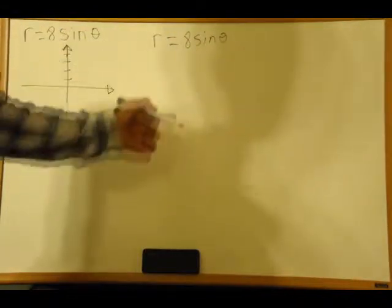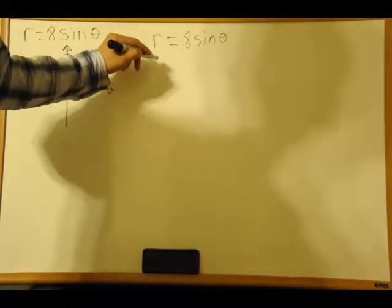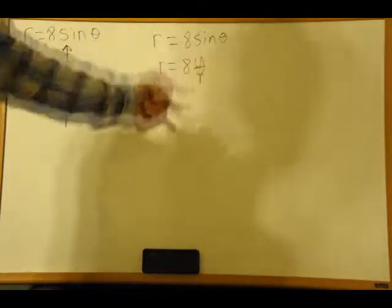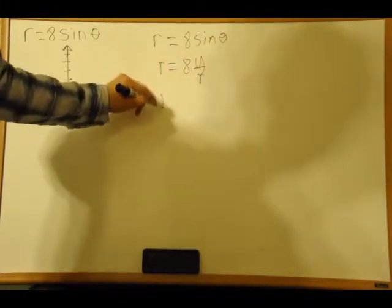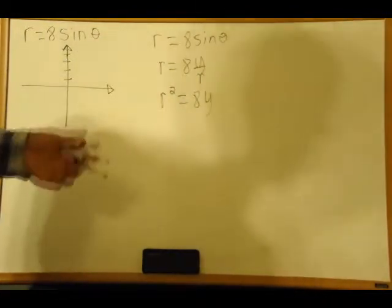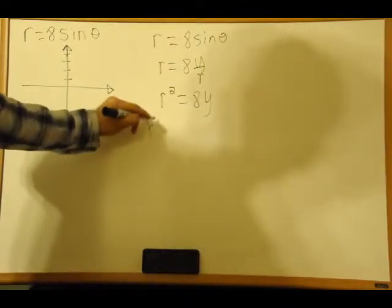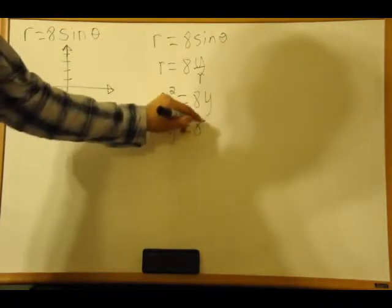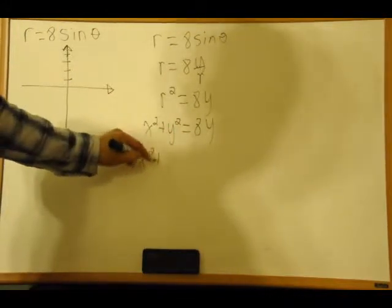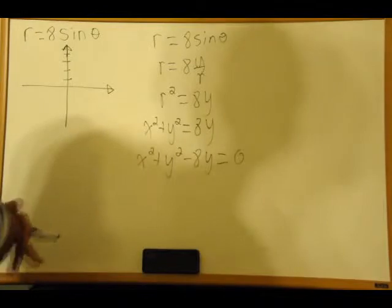Now you can recognize that y is equal to r sin θ, so divide both sides by r in that equation, and you get r squared is equal to 8y, because sin θ is y divided by r. Now multiply both sides by r squared, which is equal to 8y. Since r squared equals x squared plus y squared, we get x squared plus y squared equals 8y. So subtract 8y from both sides: x squared plus y squared minus 8y equals 0.